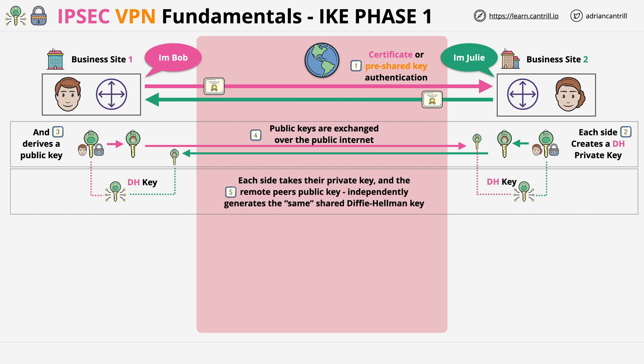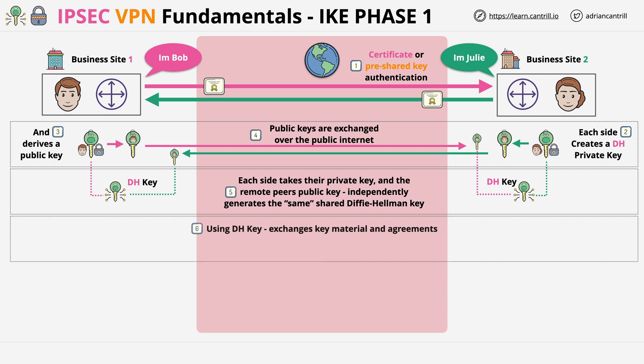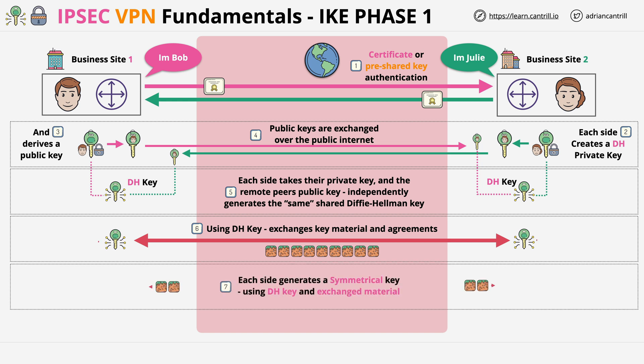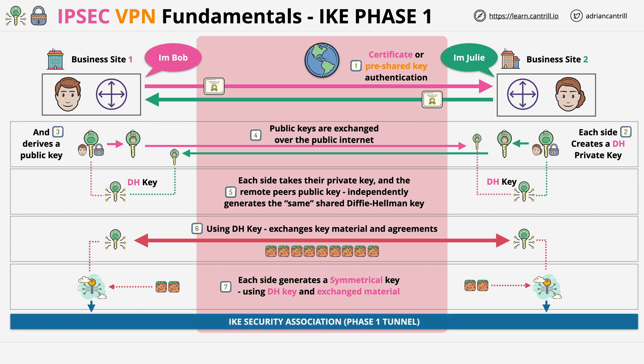The next stage involves complicated mathematics, but at a fundamental level, each side takes its own private key and the other side's public key to derive what's known as the Diffie-Hellman key. This key is the same at both sides but has been independently generated. It's used to exchange other key material and agreements — a negotiation. The result is that each side independently uses this DH key plus the exchanged key material to generate a final Phase 1 symmetrical key. This key encrypts everything passing through the Phase 1 tunnel — the IKE Security Association — and the phase ends with this security association in place.